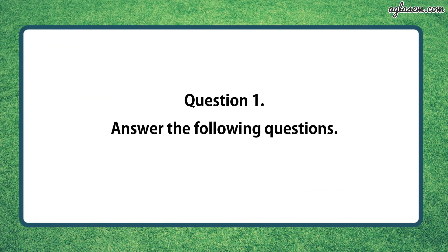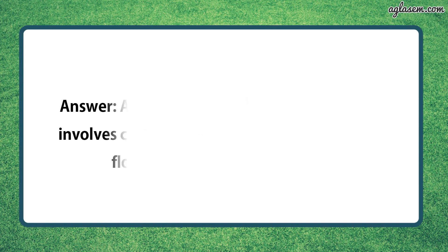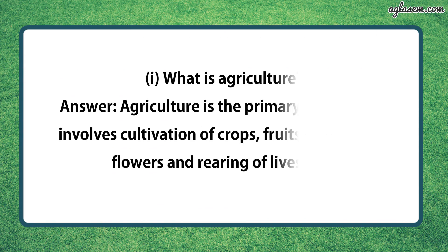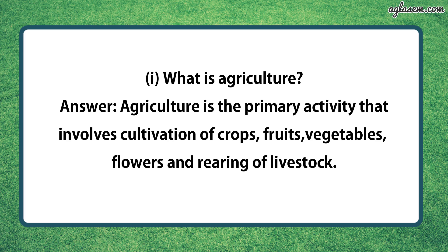Question number 1 says, answer the following question. Part 1 says, what is agriculture? So the answer is, agriculture is the primary activity that involves cultivation of crops, fruits, vegetables, flowers and rearing of livestock.